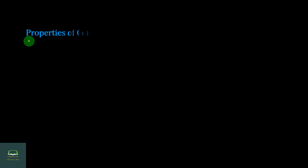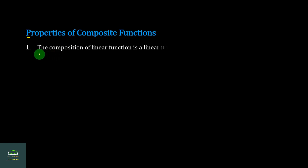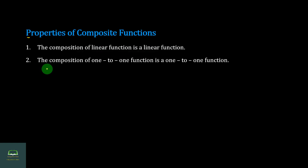Now we can write the properties of composite functions. The composition is defined on the domain. Number 1: the composition of linear functions is a linear function. Number 2: the composition of one-to-one functions is a linear function — a one-to-one function.